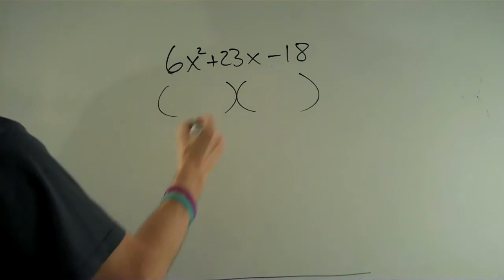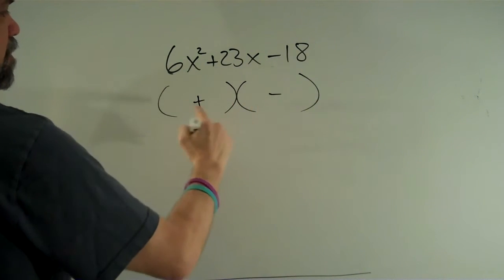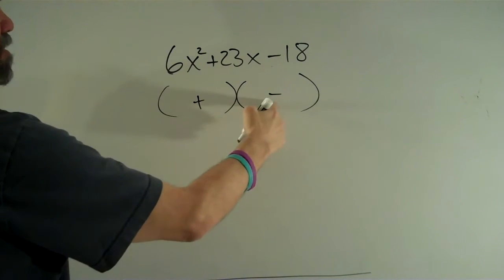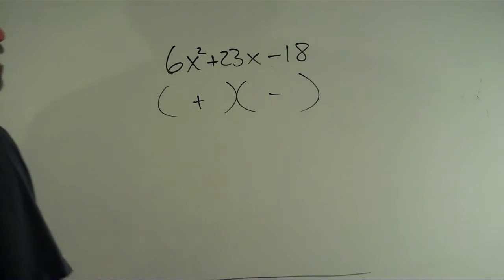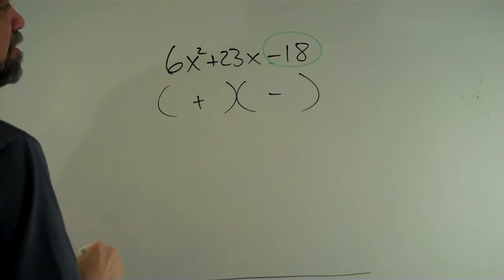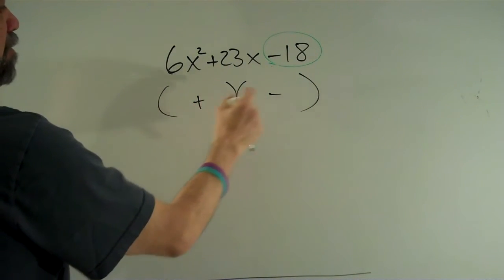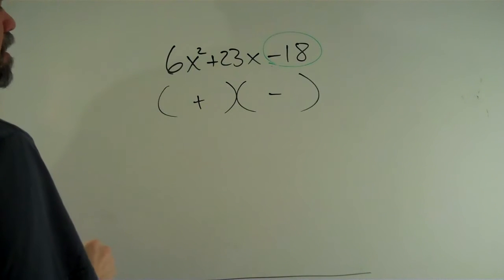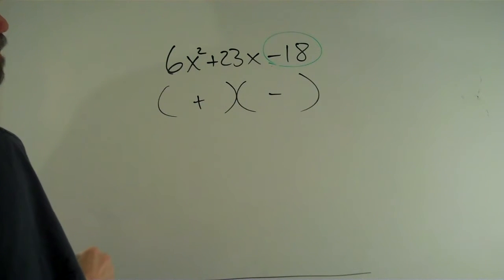And I know that I'm going to have a positive and a negative, a plus and a minus here, because I can look over here and see that I have a negative product. And the only way you get a negative product is by multiplying a positive number times a negative number. So, while I know that, I'm not sure I know too much more than that.